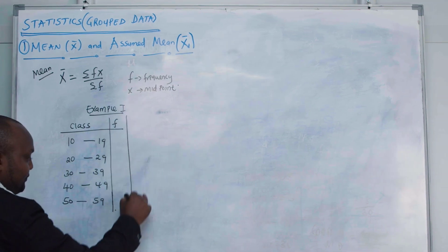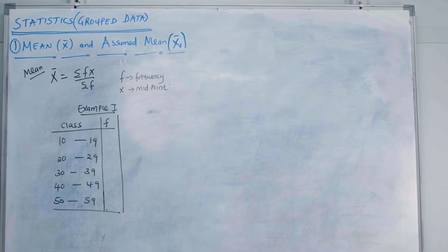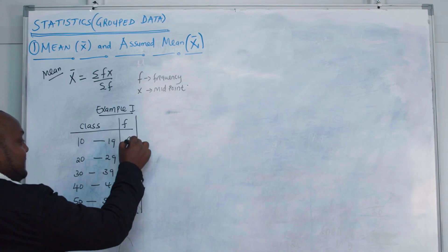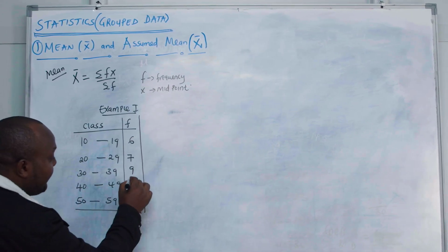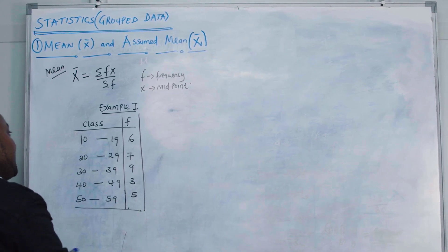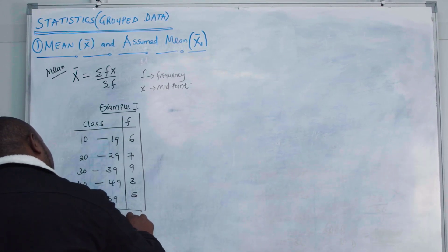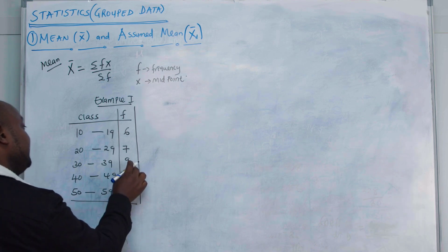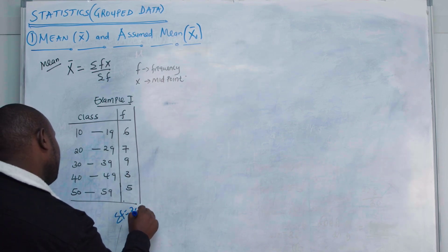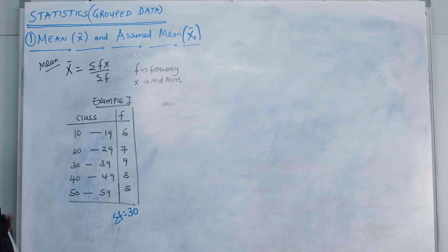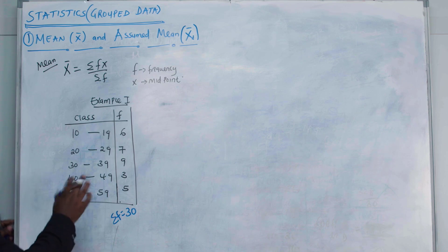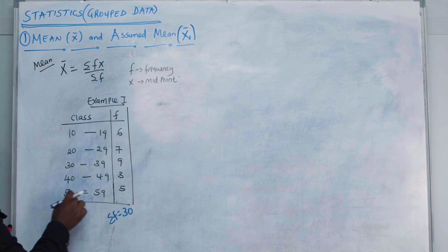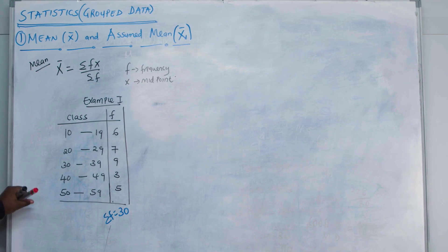We have our frequency here — this could be a class or age. Between 10 and 19 we have 6 people, 20 to 29 is 7, 30 to 39 is 9, 40 to 49 is 3, and 50 to 59 is 5. The total frequency is 30. So you'll be given this as grouped data and asked to calculate the mean.